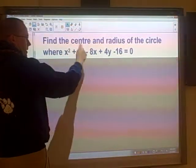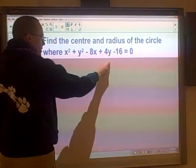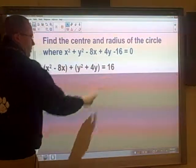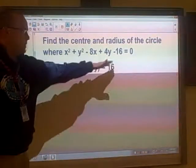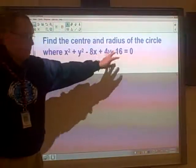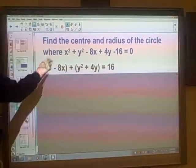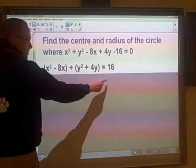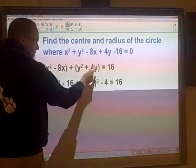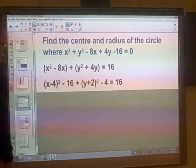So first of all, I want to bring my x terms together and my y terms together. So just using my commutative rule, I can start to rearrange it like this. Now I brought the 16 to the other side because eventually this is going to equal r². So I brought my number terms to the other side. So when I do complete the square, I do a half of this number. So I get -4. And when I do a half of this number, I get positive 2.